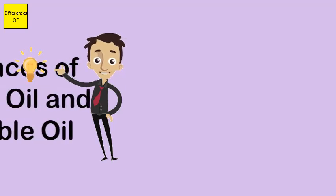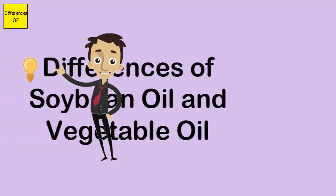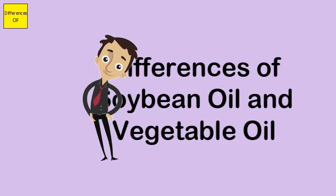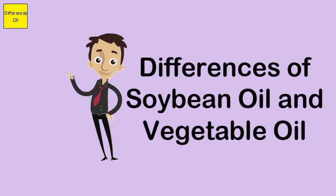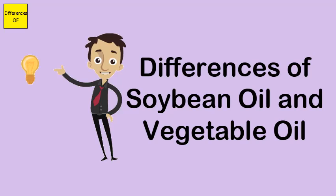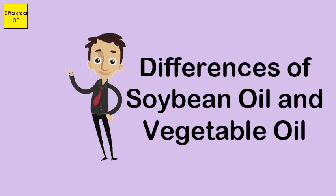The difference between soybean oil and vegetable oil: soybean oil is extracted from soybean seeds, while vegetable oil is extracted from vegetable and plant sources like seeds, nuts, legumes, and fruits.